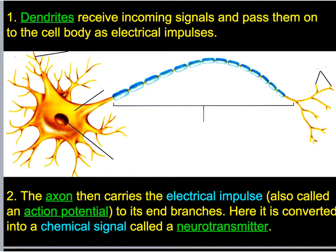These notes look at the functions of the different parts we've labeled. Dendrites receive incoming signals — either from the environment or from another neuron — and then send that signal to the cell body, which may then initiate an action potential down the axon. The axon carries that electrical impulse — also called an action potential — all the way down to the axon endings, where it's converted into a chemical signal called a neurotransmitter to cross the synapse, or gap, to the next neuron.